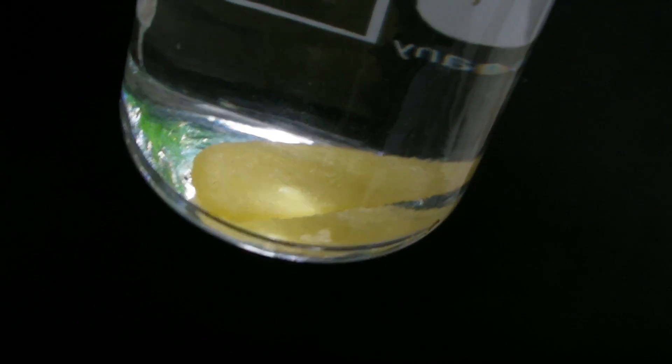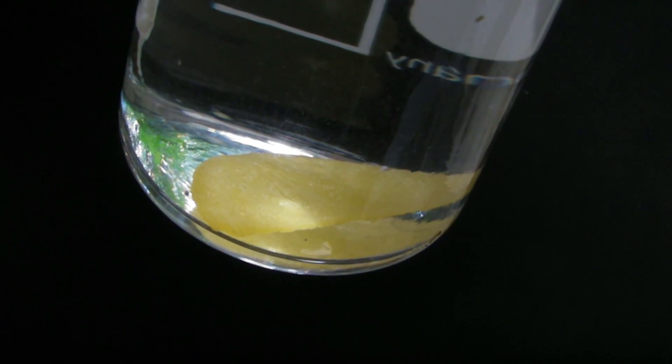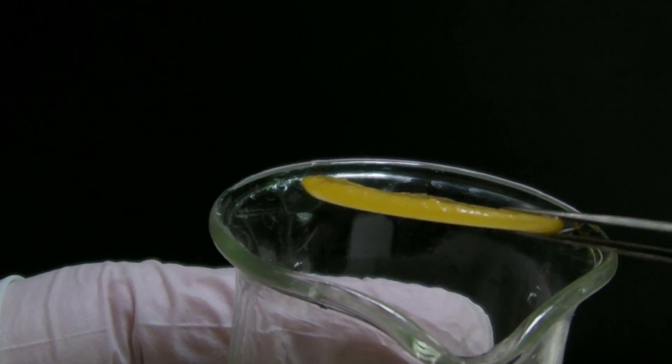White phosphorus is mainly known because of its use in incendiary bombs which have been used in the Second World War and the Vietnam War.